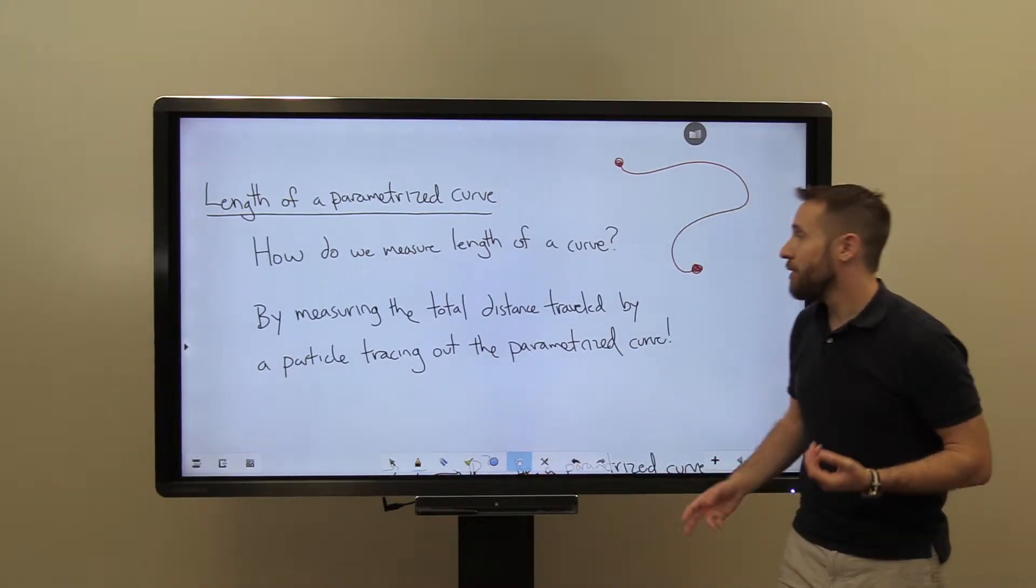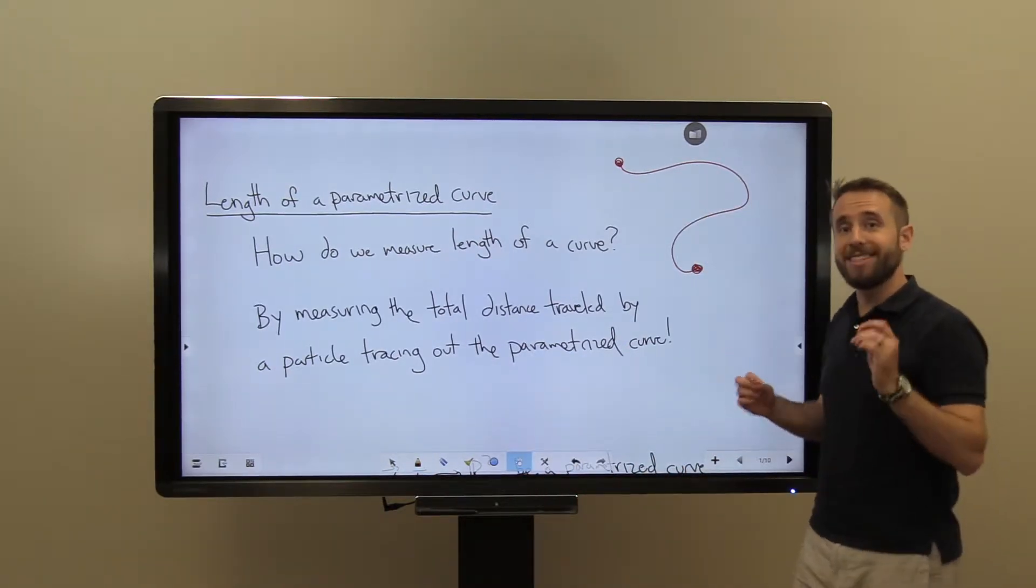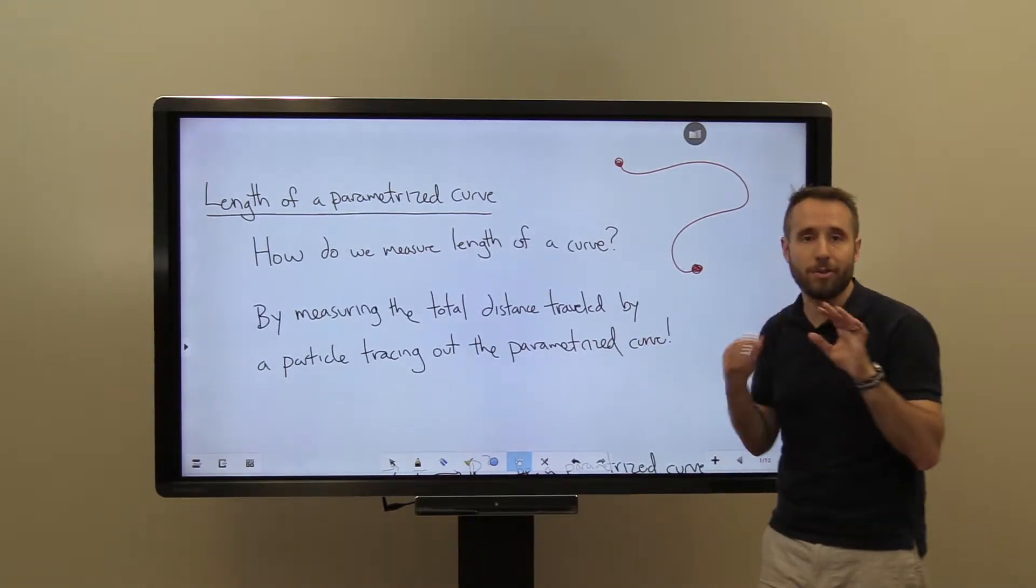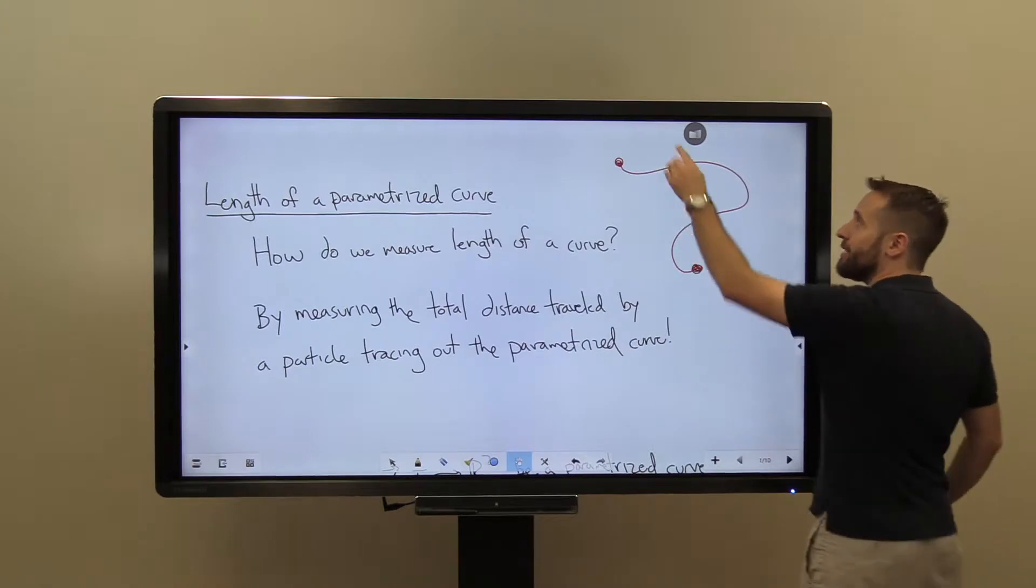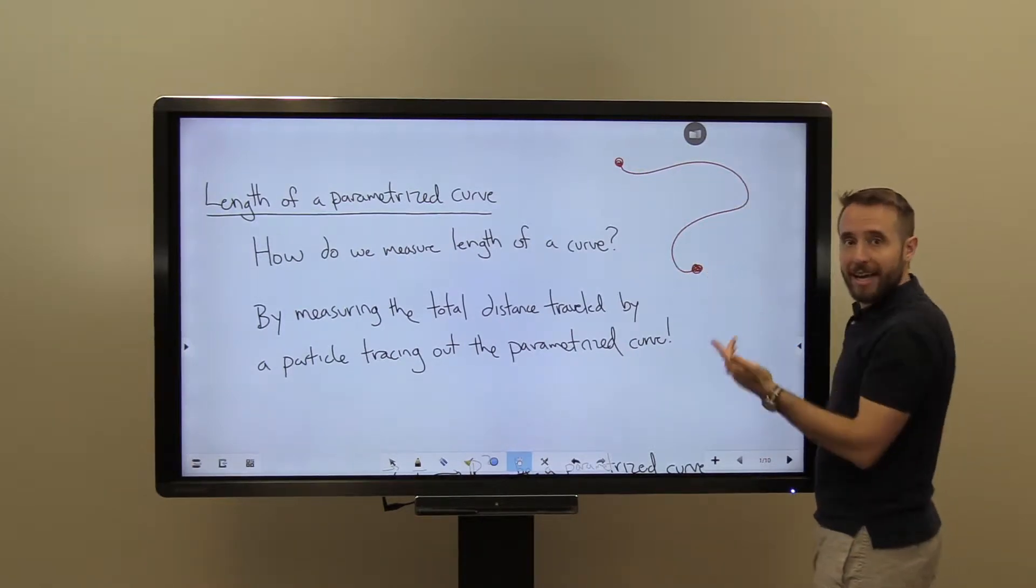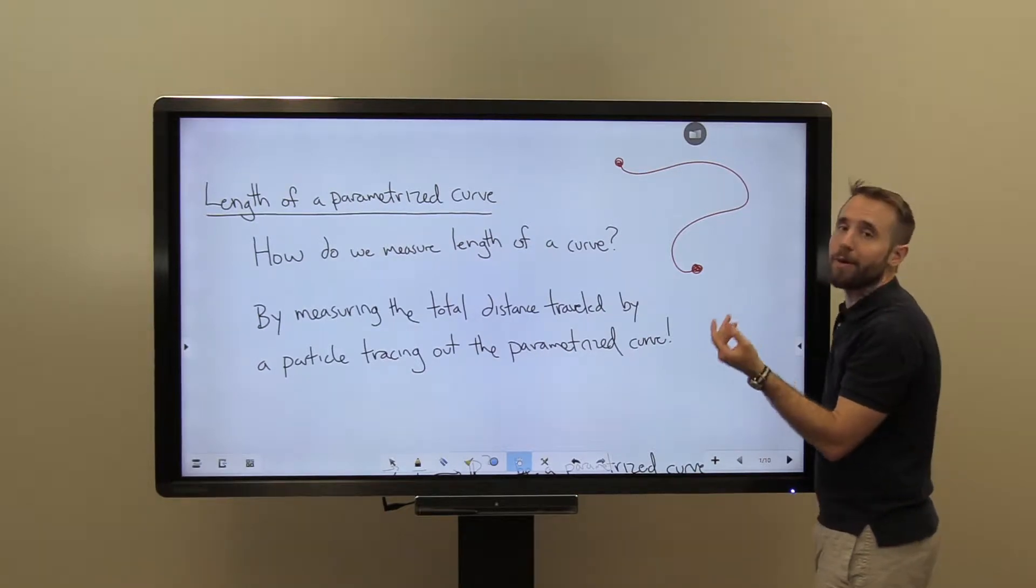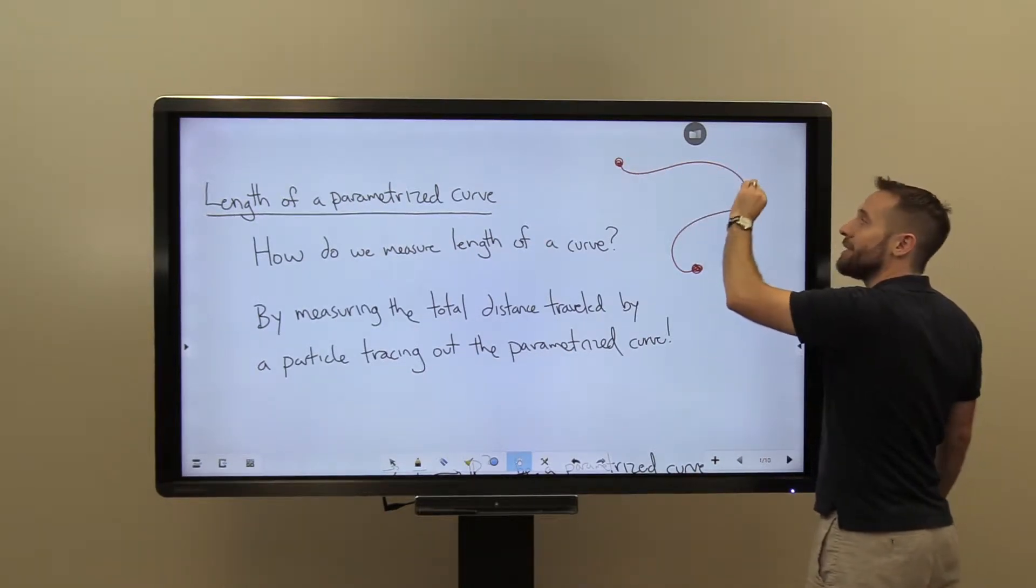Well, intuitively, we can do this by measuring the total distance traveled by a particle tracing out the parameterized curve. So there's really little difference between tracing out this total length and tracing out the distance traveled by the particle, if we want to think of it as a particle, that is doing the tracing.